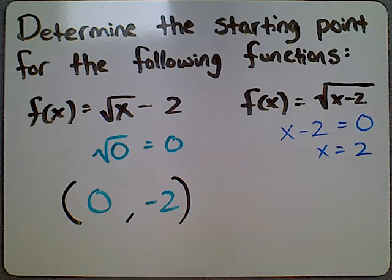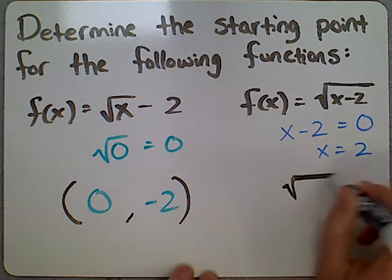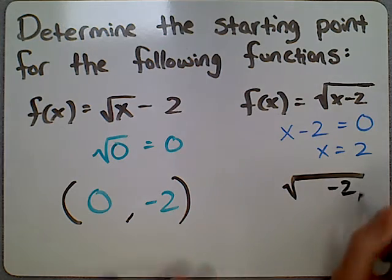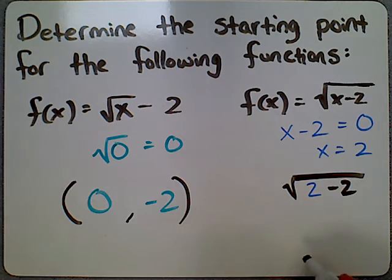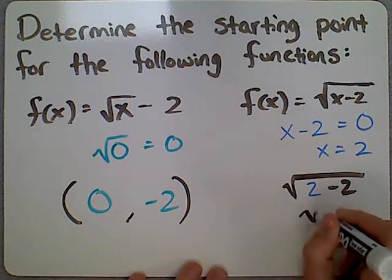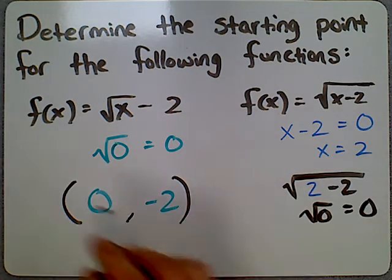And just to demonstrate that one other way, if you've got the square root of x minus 2 equaling 0, and you plug in that 2, 2 minus 2 is 0, and the square root of 0, as we mentioned before, is 0.